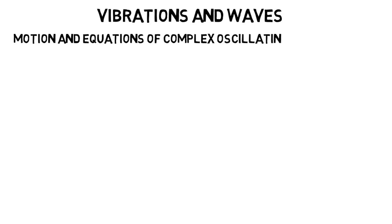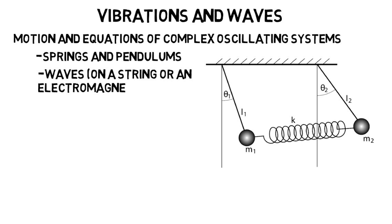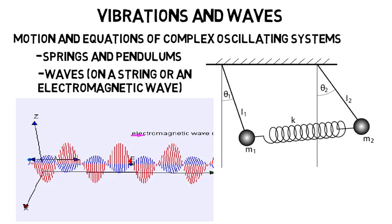You'll take a class on vibrations and waves, where you'll just look at the motion and equations of complex oscillating systems like springs and pendulums, then also waves like ones on a string or an electromagnetic wave moving through air and space.